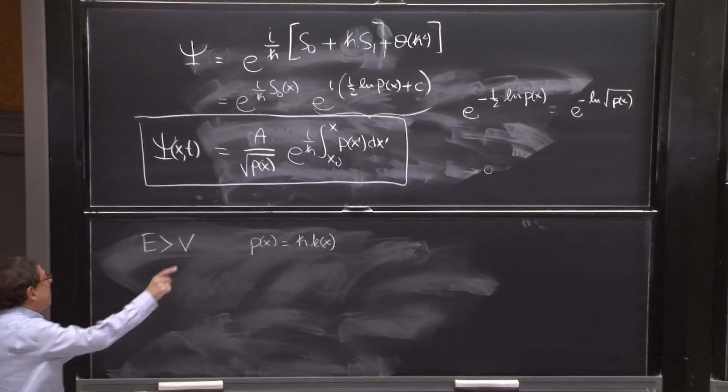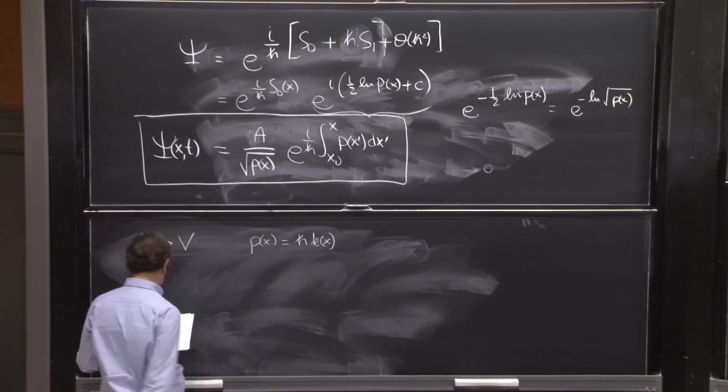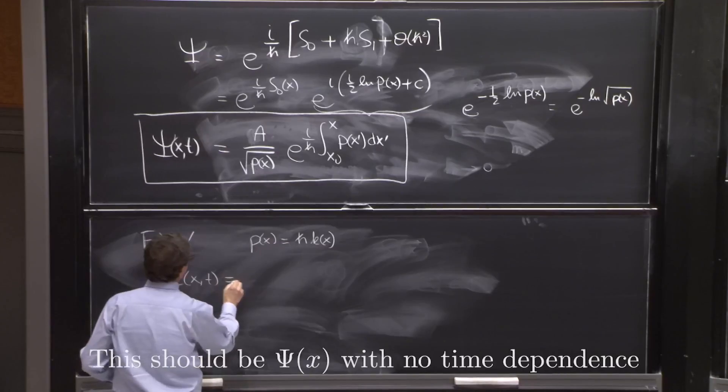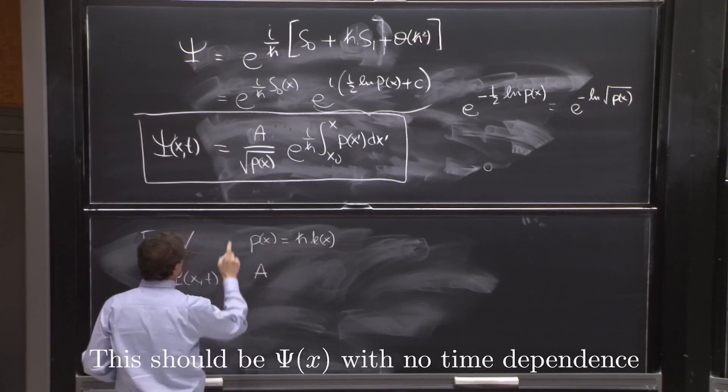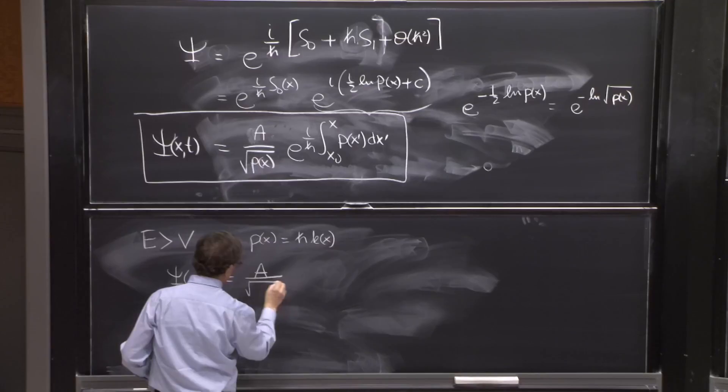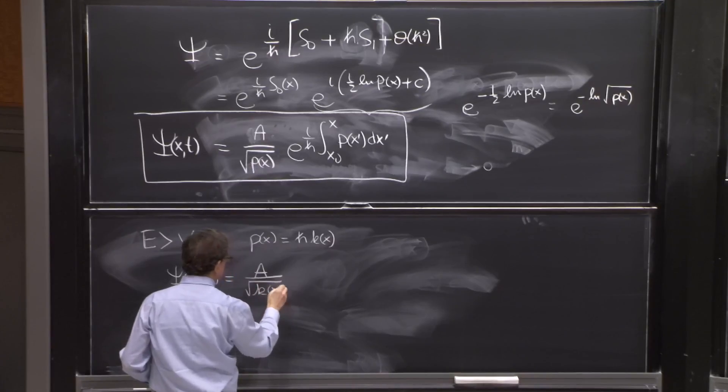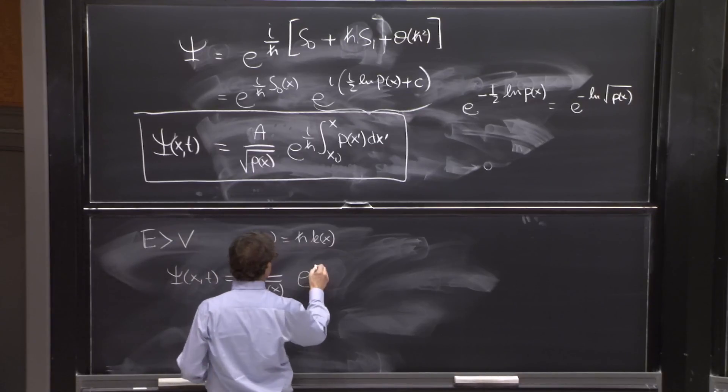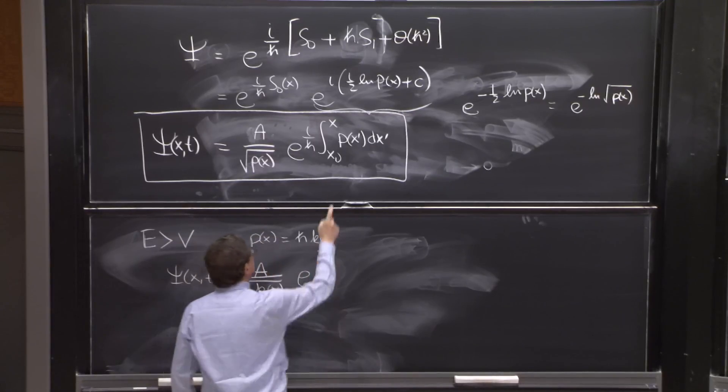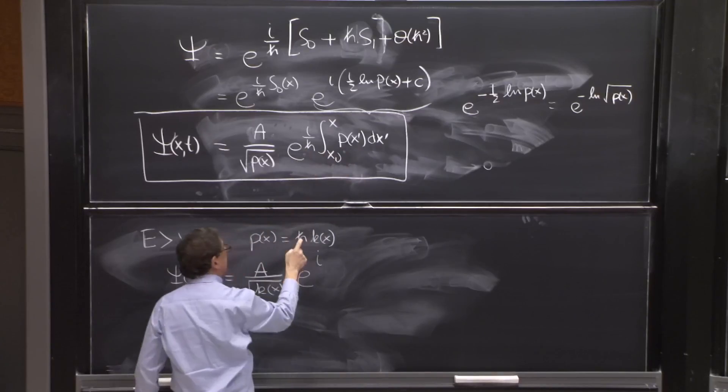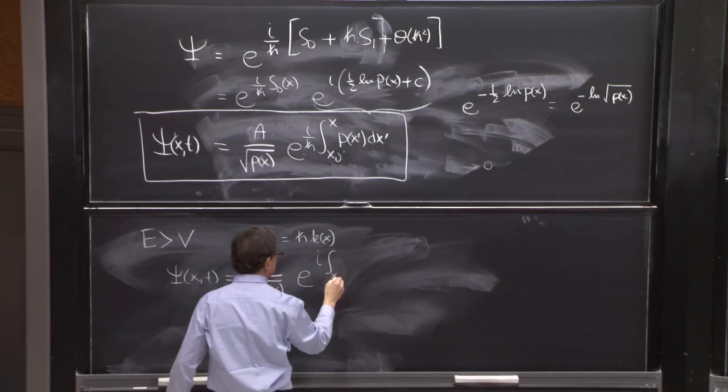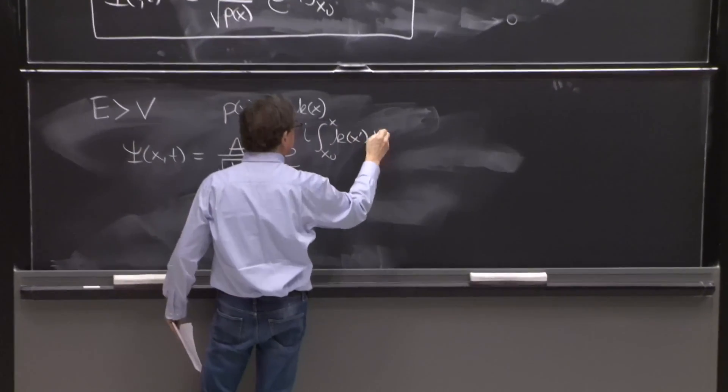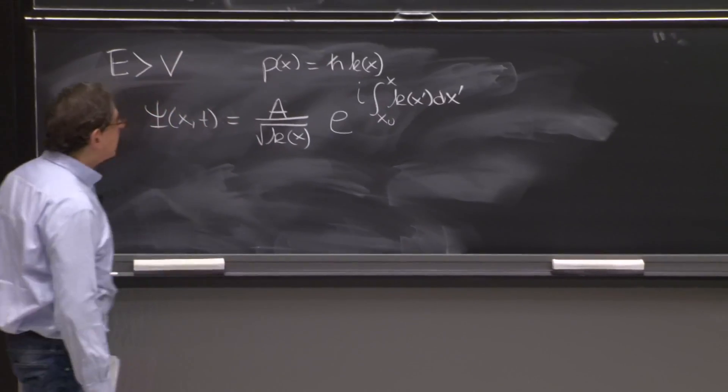OK. So if p of x is h bar k of x, we can have the following solutions. Psi of x and t equal a, another constant, square root of p. Let's go simpler, square root of k. It's a different a. And here, e to the i, since p is h bar, it cancels here. So we have a simpler integral as well. x0 to x, k of x prime dx prime. So that's that term.